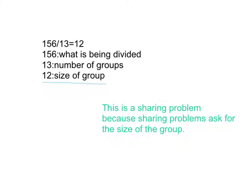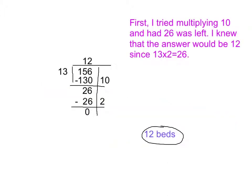156 identifies what is being divided. 13 identifies the number of groups, and 12 identifies the size of the group. This is a sharing problem because sharing problems ask for the size of the group.